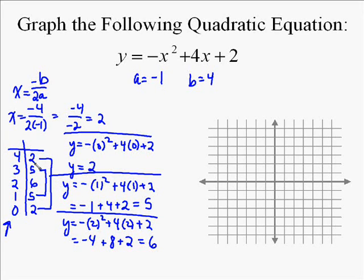Now you've got your 5 points, so we go plot those 5 points. So we go to 4 over 2 up. And then we're going to go 3 over 5 up. And then we're going to plot the vertex, which is 2 comma 6. That's the most important point.